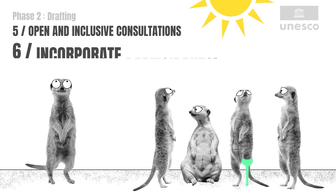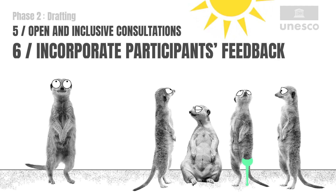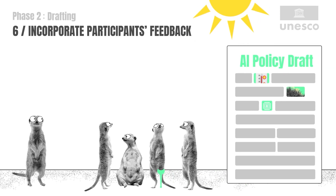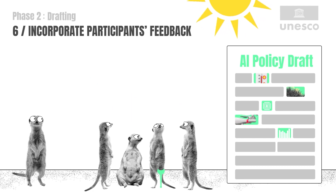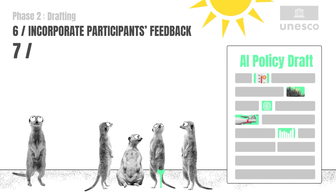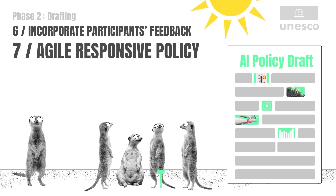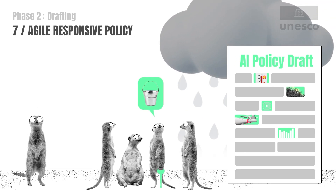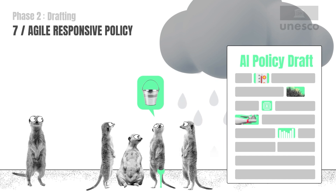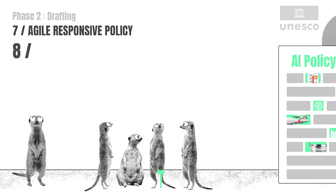Building block 6: Commitment to incorporating participants' feedback. Participation should lead to an impact on policies. Building block 7: Make AI policy agile and responsive to evolving needs. A flexible approach to AI policy mitigates many of the risks of implementation.